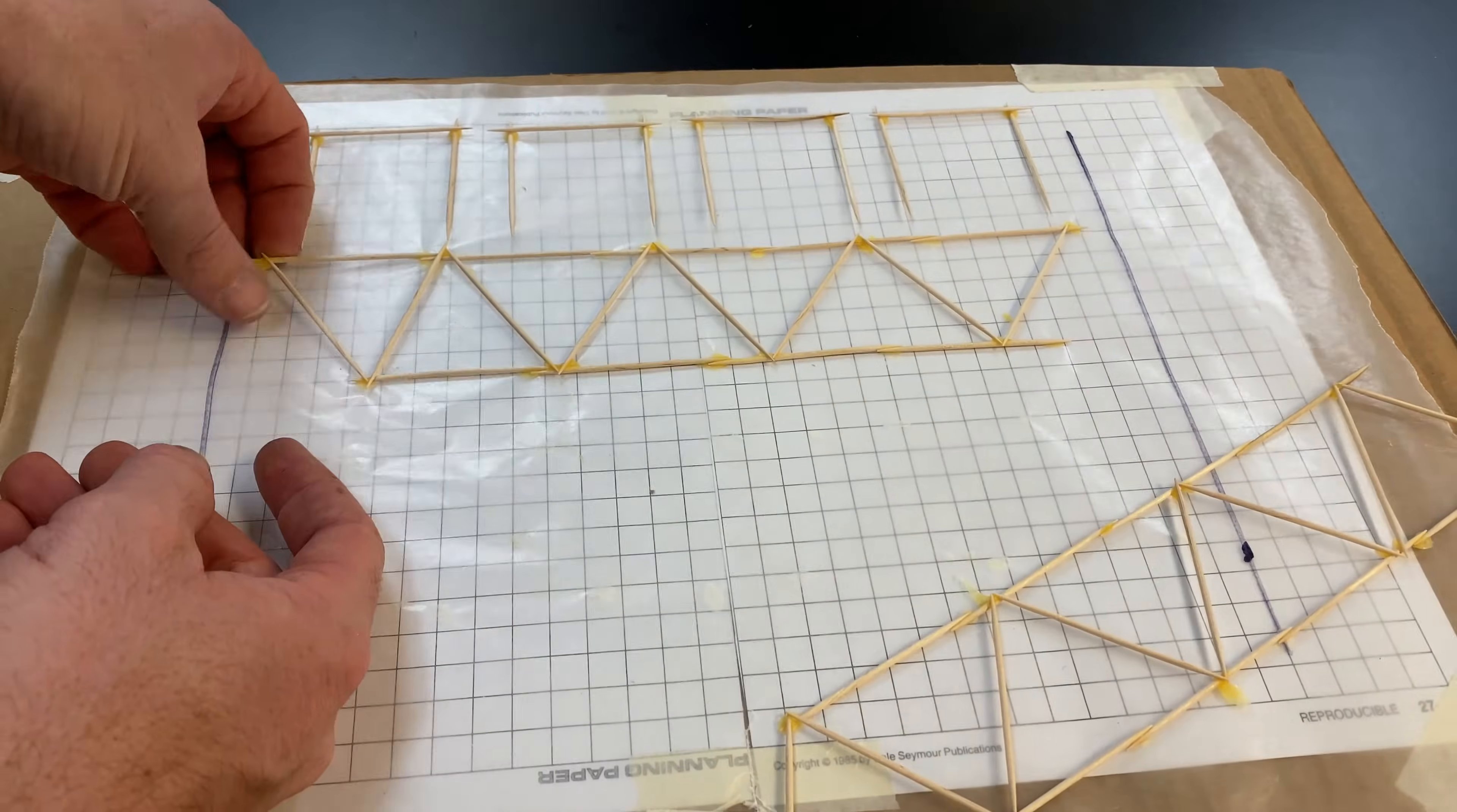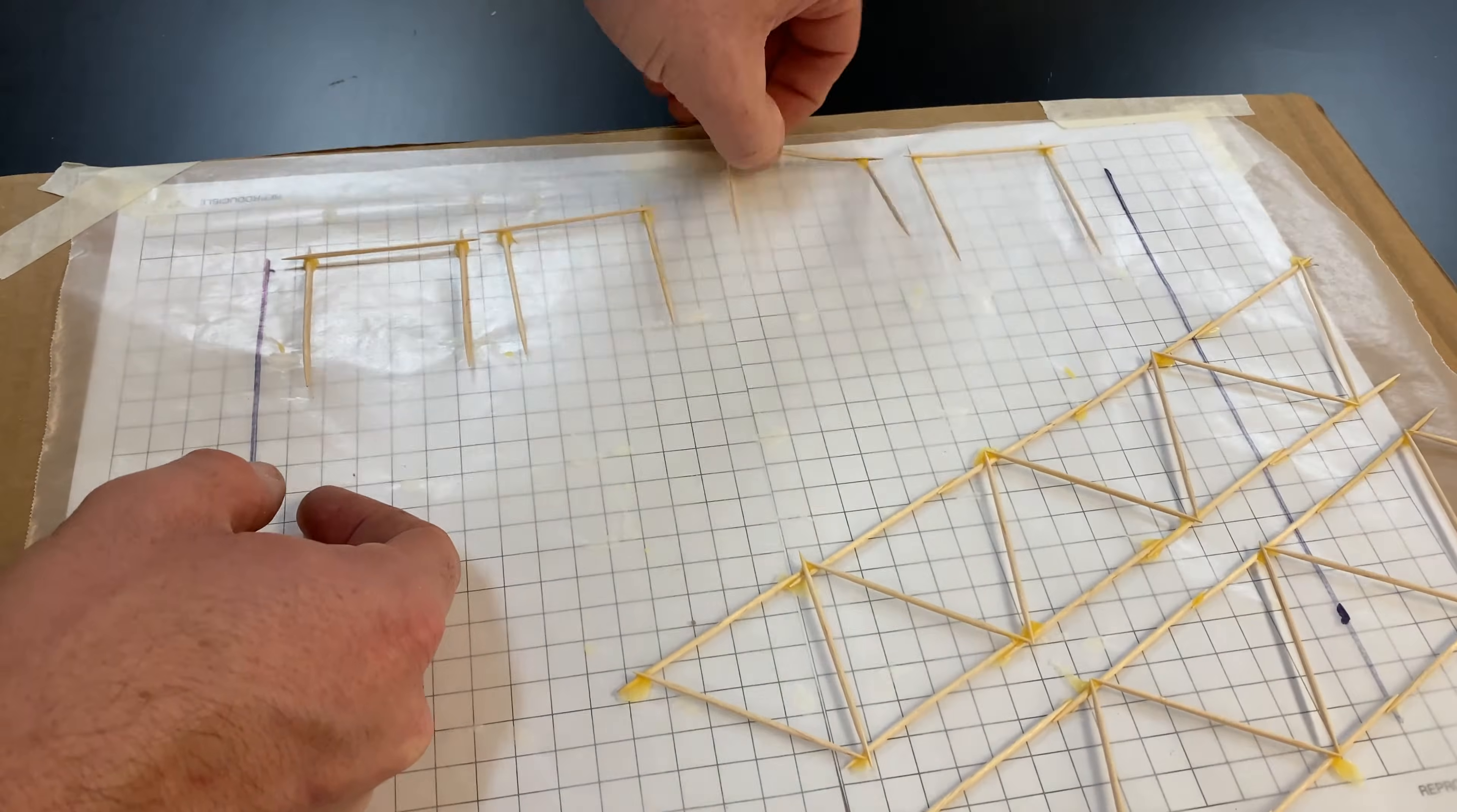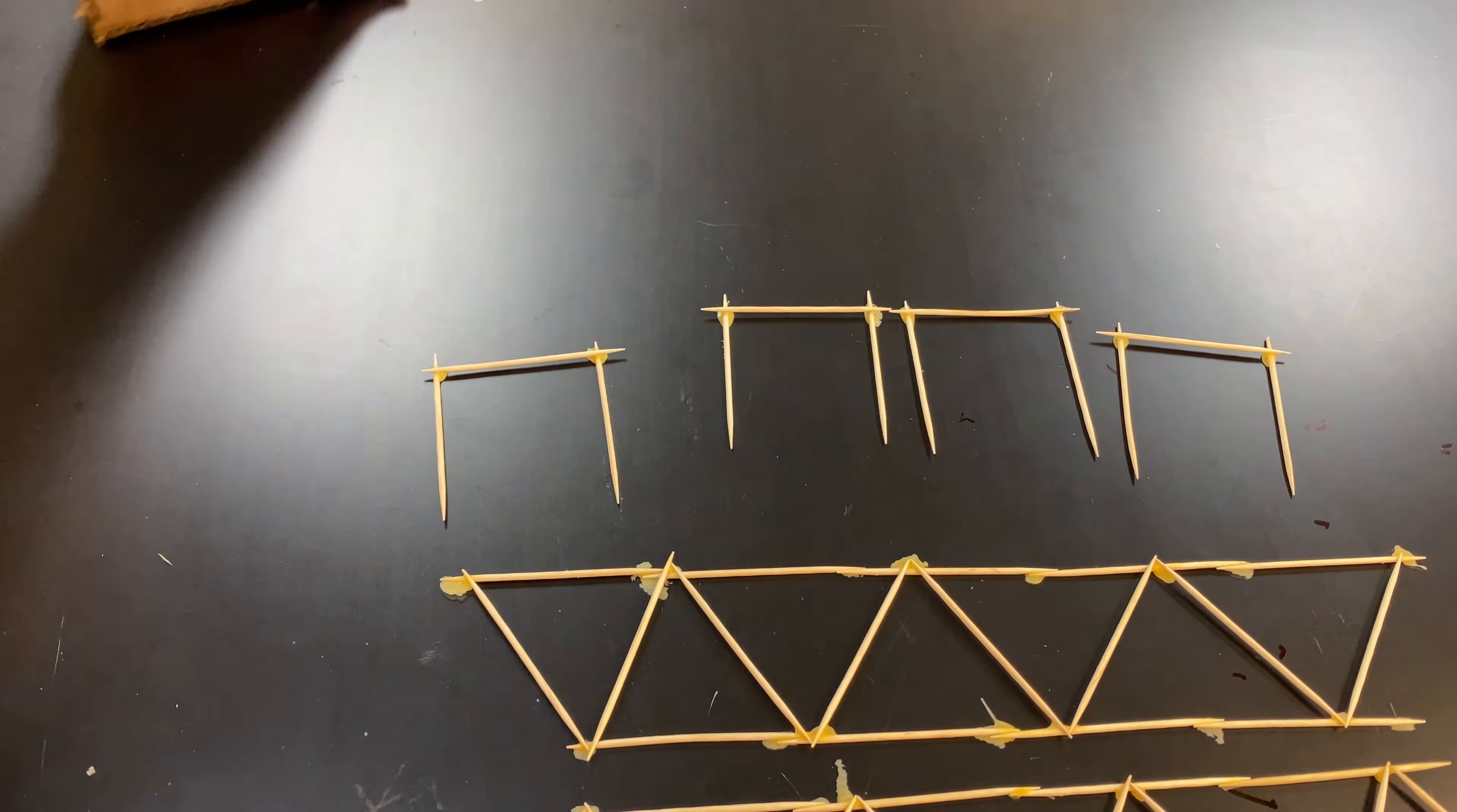Now that everything is dry, it's time to glue the two sides of the bridge together. Carefully peel the sides of your bridge off the wax paper. If you use tiny dabs of glue, this step will be a lot easier.